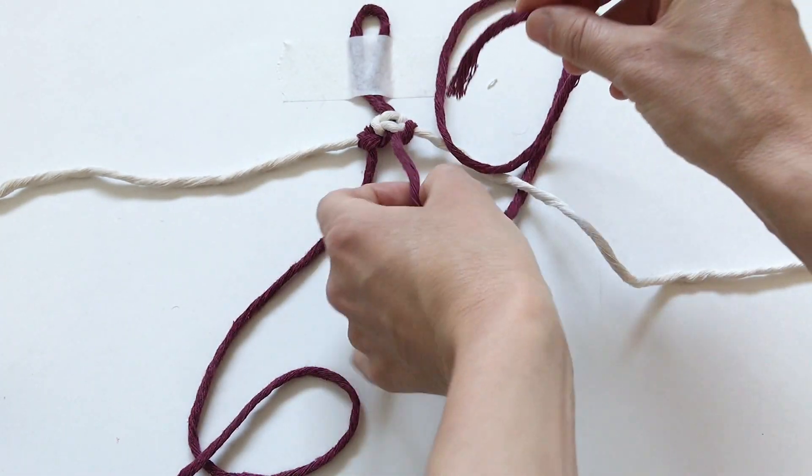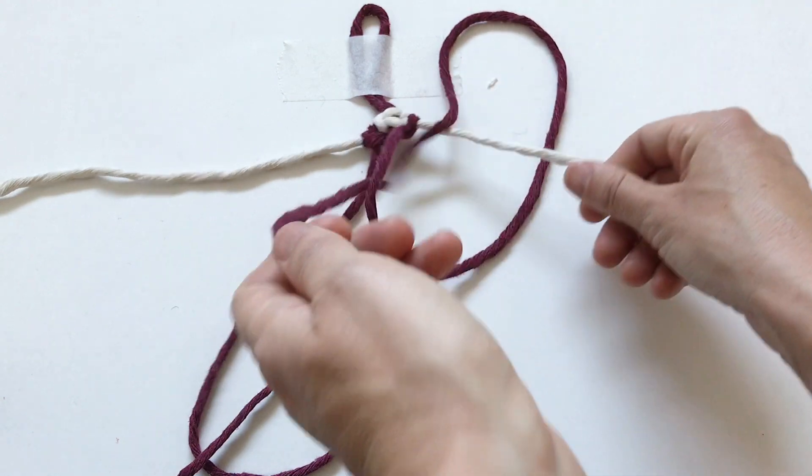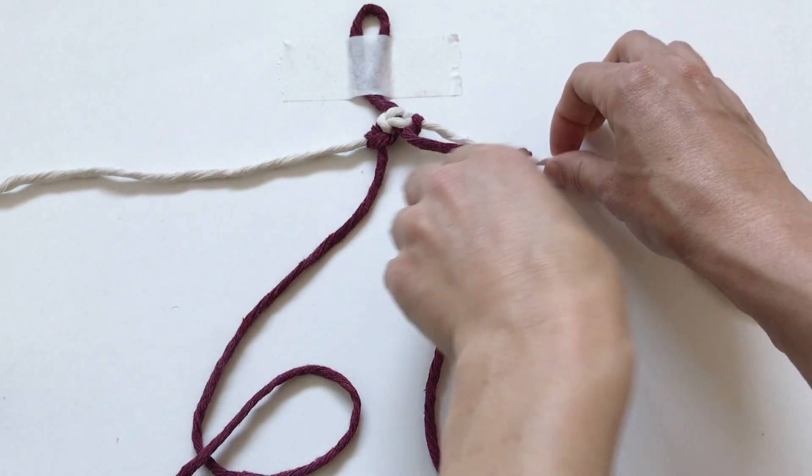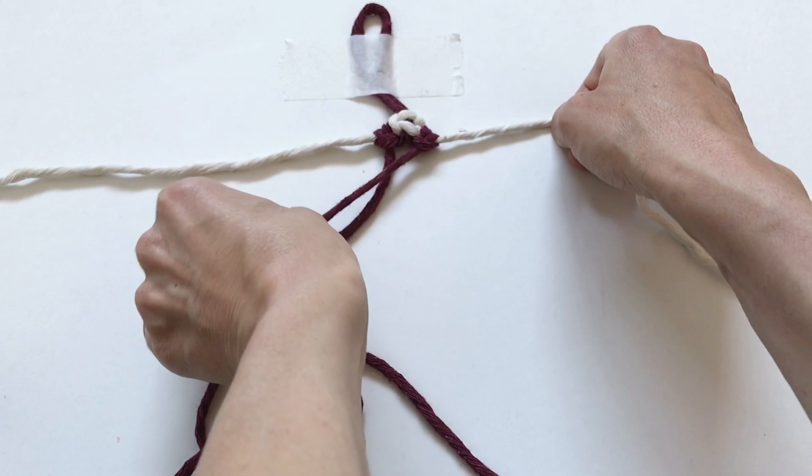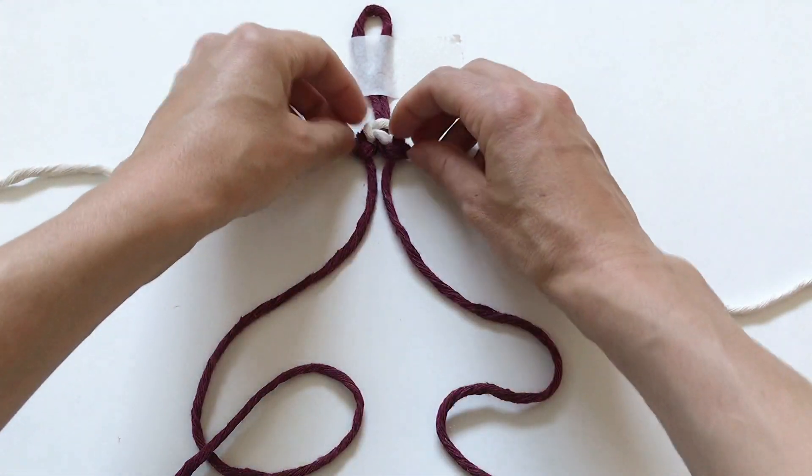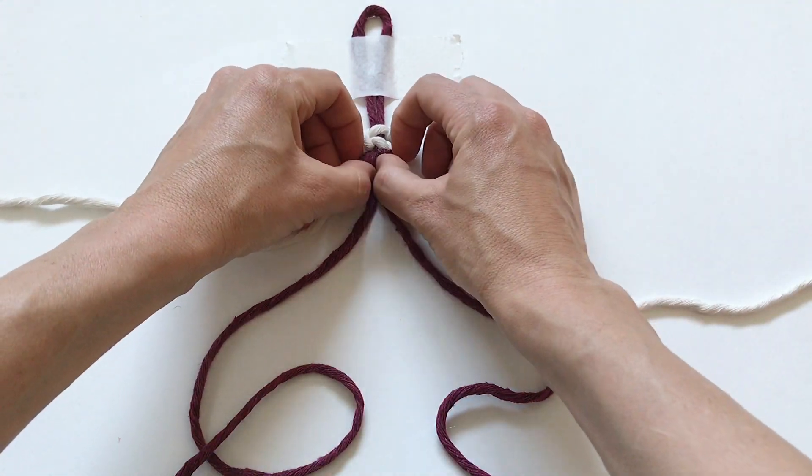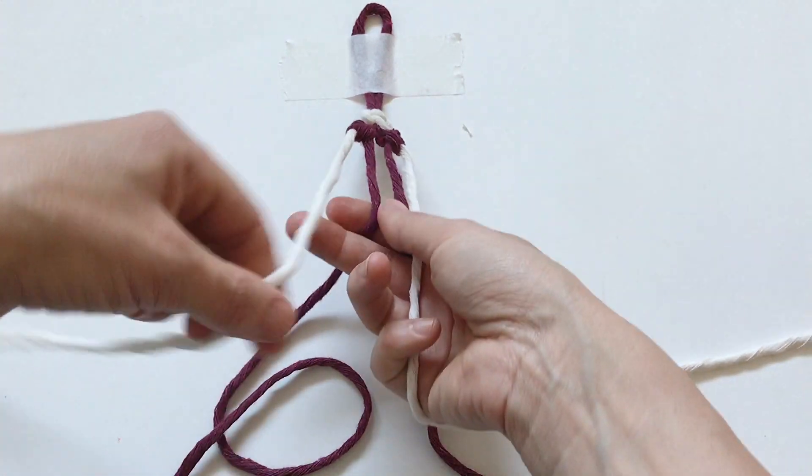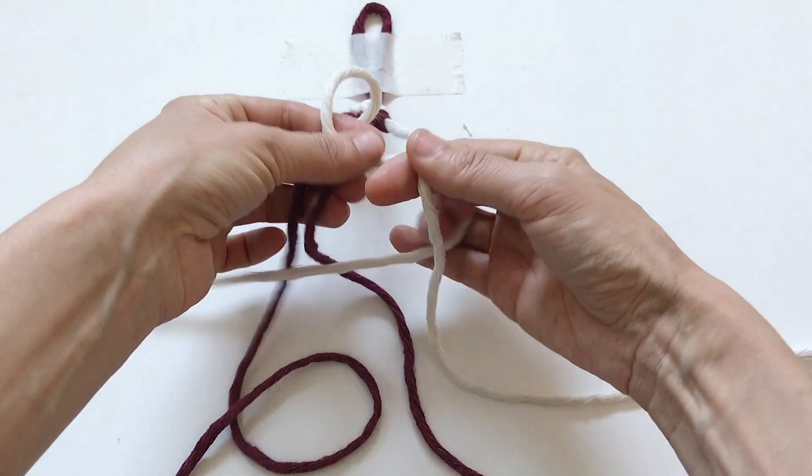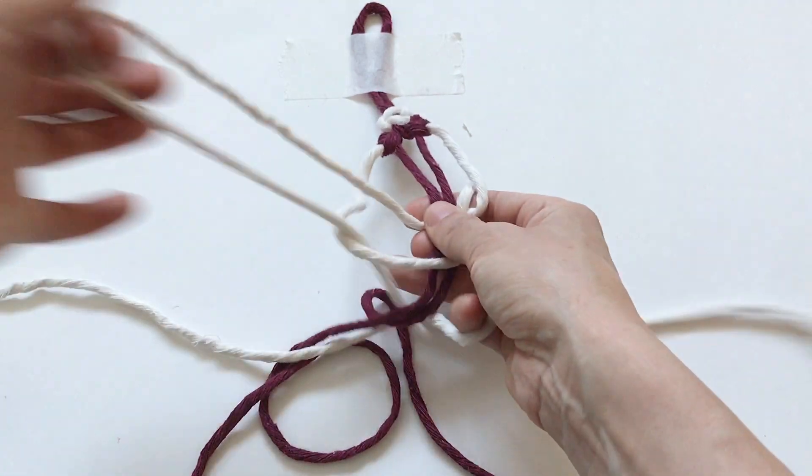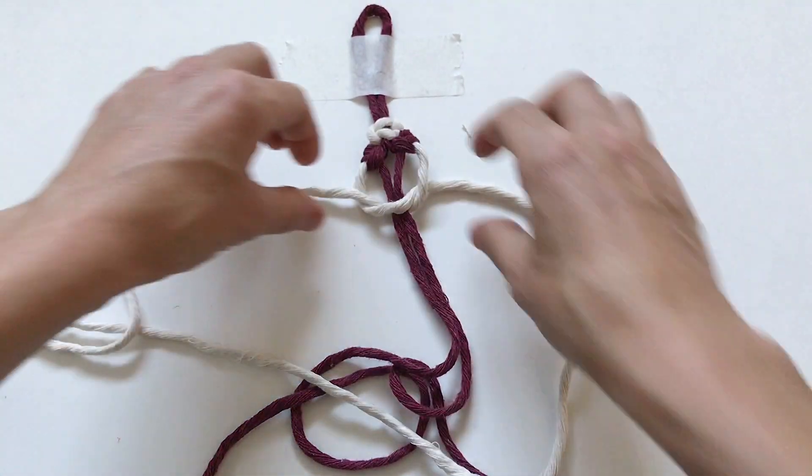Now I'm going to join these two together. I'm going to space this out just a little bit and do another square knot over top of those red ones, just like we did the first one. There's the first complete unit.